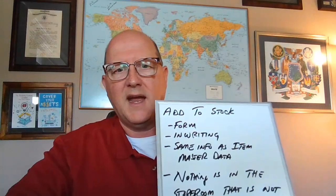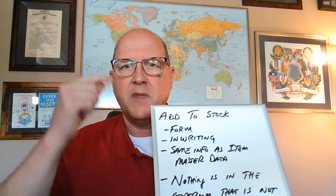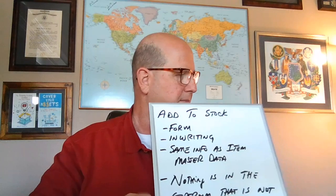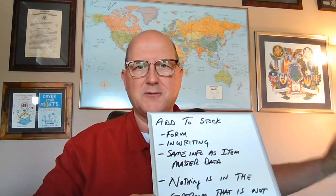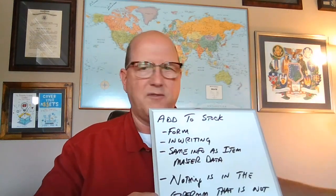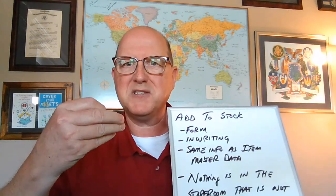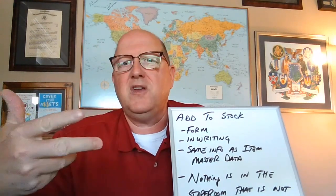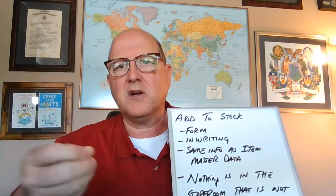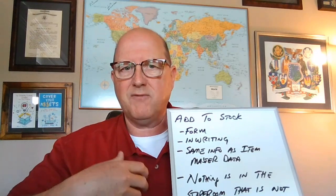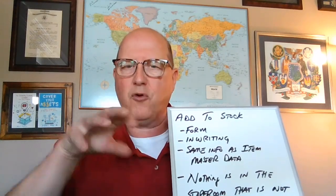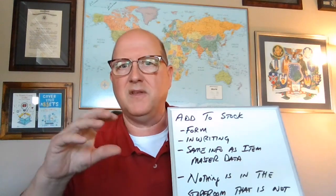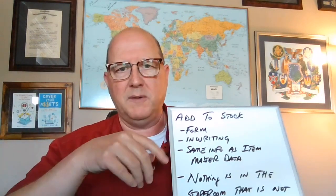I've got my little friend here, my whiteboard. Add to stock — if you want something in the storeroom, here's a form. Fill it out. If you're the requester, you have some responsibility to fill out: what is it, where does it go, how many do you need, where'd you get that one, how much did it cost? Give me some basic information. You've got to fill out a form. The form has other parts — the storeroom fills out a part of it, and then the purchasing department fills out a part of it.